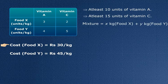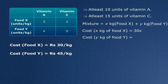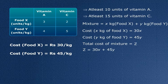Now the cost of 1 kg of food X is Rs 30. So the cost of X kg of food X will be 30X. Similarly, the cost of 1 kg of food Y is Rs 45. So the cost of Y kg of food Y is 45Y. Let's say that the total cost of the mixture is Z. So what would be Z? That's nothing but 30X plus 45Y.